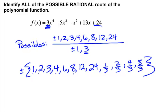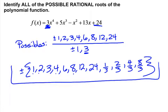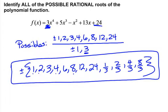Obviously not all of those are going to work — that's a lot of answers, and we only have 4 roots for this problem. But we would begin with these to start testing out values to see what might make a zero. This is all we need as our answer when we list off the possible rational roots.